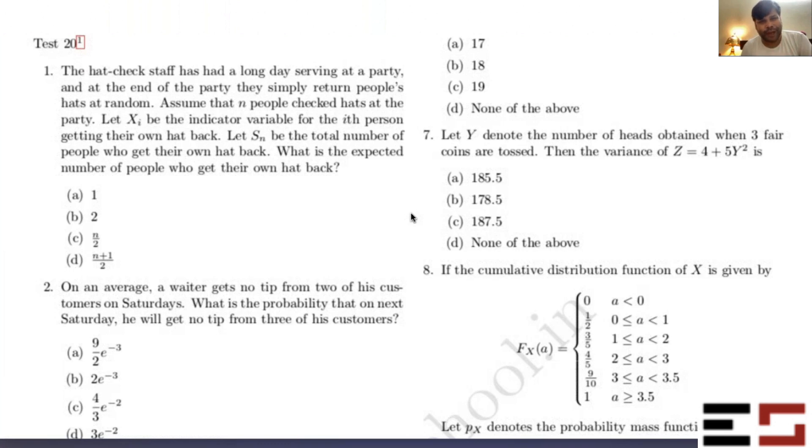I mean I didn't ask you to actually find the expected number of people who get their own hat. I also told you let Xi be the indicator random variable, so just use that and then it's just straightforward.